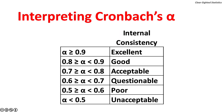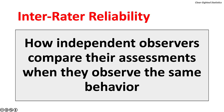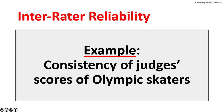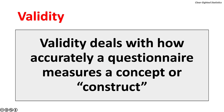Cronbach's alpha is a statistical technique that calculates the mean reliability scores for all possible ways of splitting the questions. An alpha of greater than or equal to 90% has excellent reliability. An alpha greater than or equal to 80% but less than 90% has good reliability. An alpha greater than or equal to 70% but less than 80% has acceptable reliability. Inter-rater reliability is based on how independent observers compare their assessments when observing the same behavior — for example, the consistency of judges' scores on Olympic skaters.